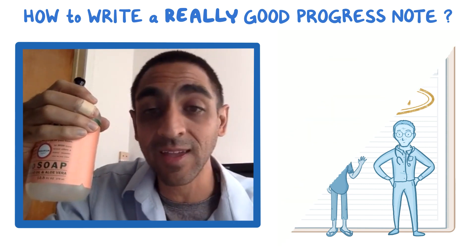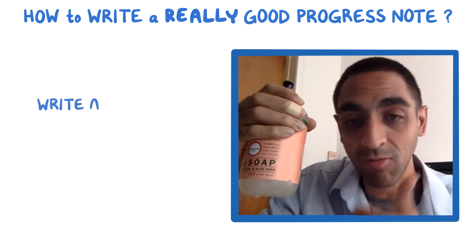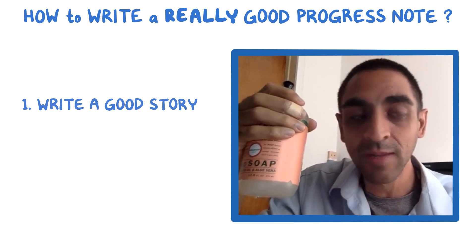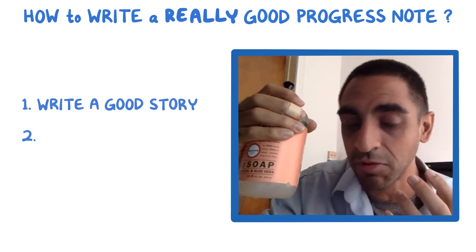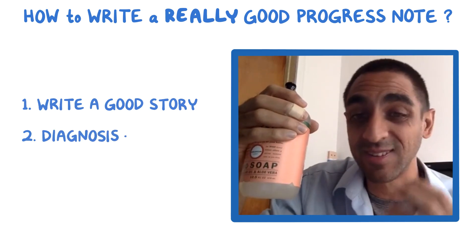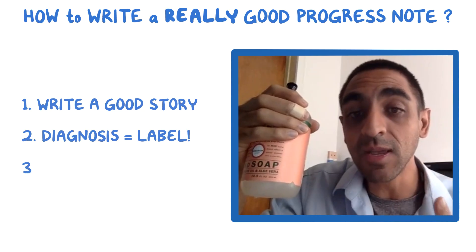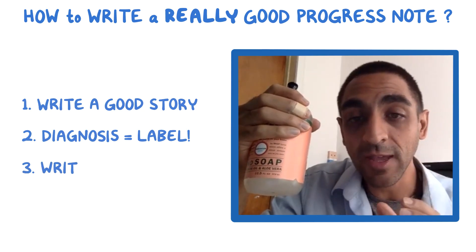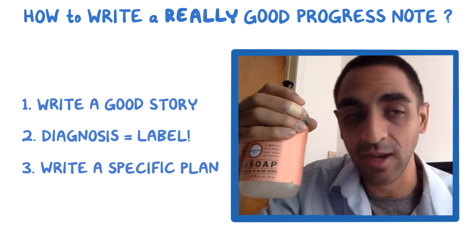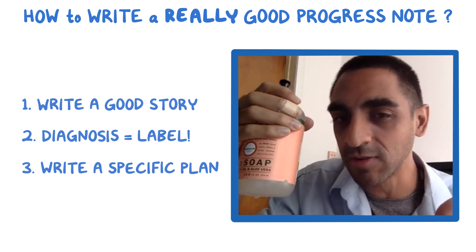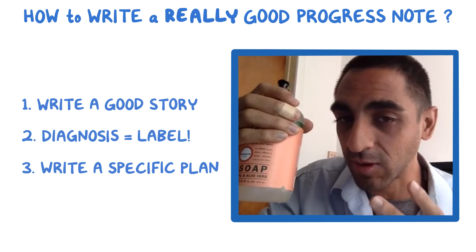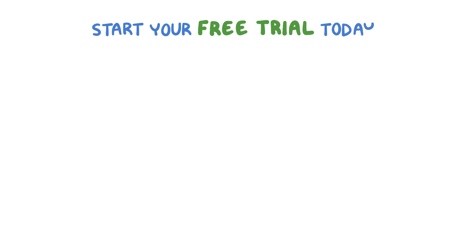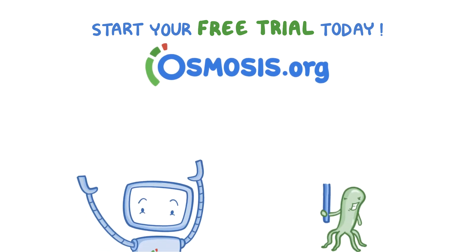The goal of a good SOAP note is: A, get the information right by writing a good story — tip number one. Number two, make sure the assessment is truly thought through because a diagnosis is a label. Number three, make sure your plan is very specific. So: write a story, remember your diagnosis is a label, and write a very specific plan. Start your free trial today at osmosis.org.